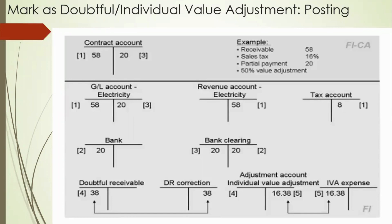For doubtful receivables and payables: contract account one has 58, paid is 20, so we are left with 38 — which was the example from before. The 20 is paid and gets cleared, and finally we have 38 which we need to correct. This 38 came from document number four, and it will clear with 38. But as per adjustment rules, we are only getting 16.38 as the adjustment amount, and that needs to be posted on the debit side. So 16.38 gets cleared and the doubtful amount also needs to get cleared — we need to post both.